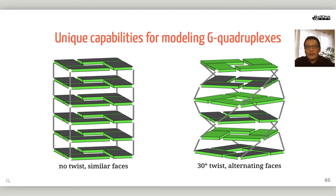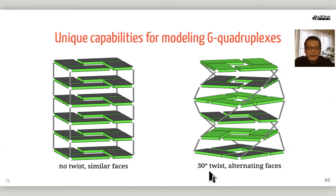DSSR also has unique model building capabilities for G-quadruplexes. On the left is a schematic of a ladder with no twist, where all G-tetrads have a similar face. On the right, I introduce a 30-degree twist and also alternate the faces of the G-tetrads up or down, colored green or black.